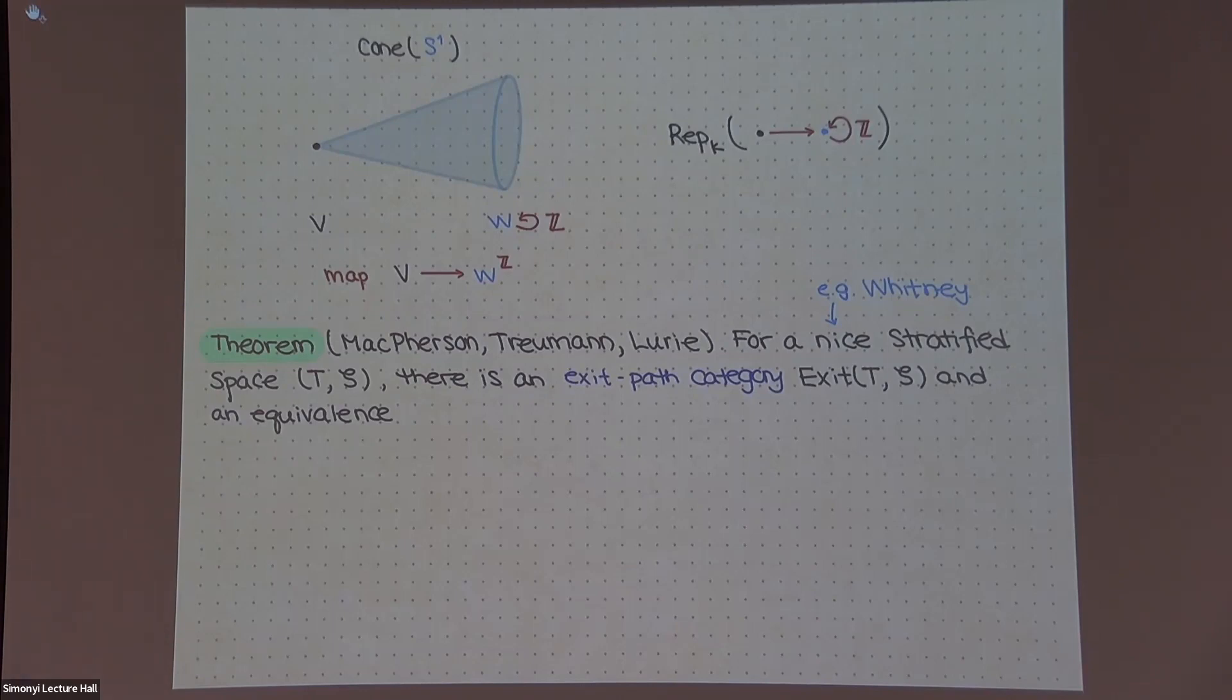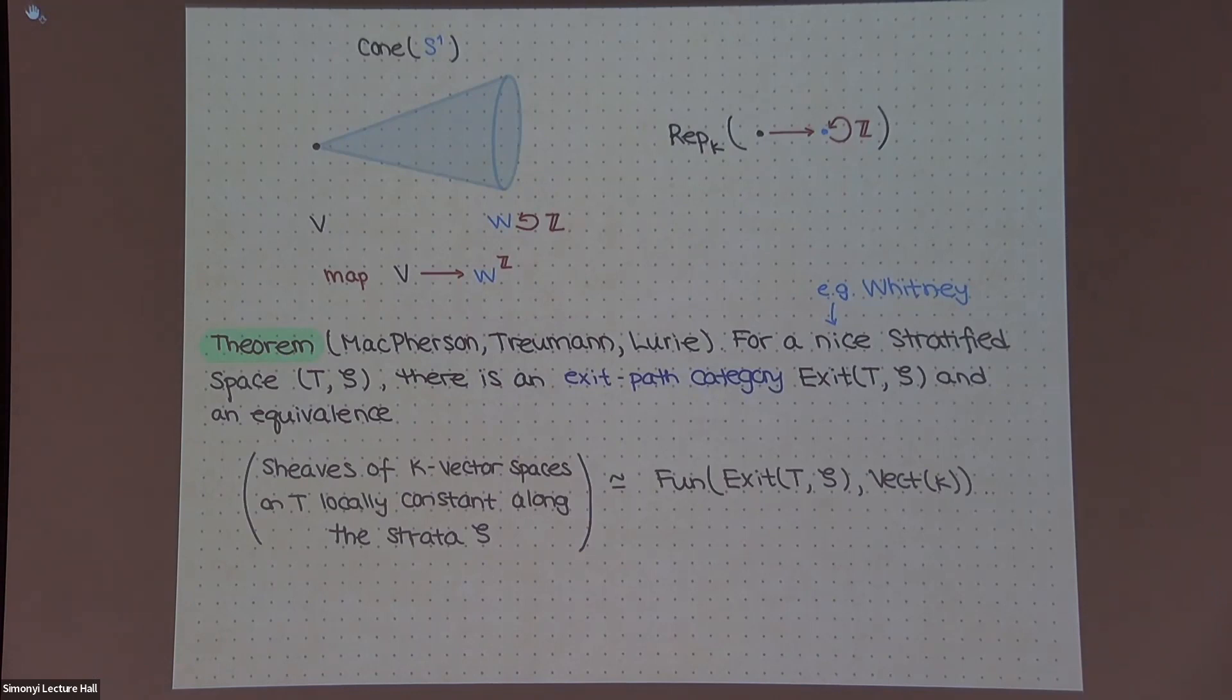So if you have a nice stratified space, so something that's broken up into some nice locally closed subspaces, like if you've heard of a Whitney stratified space, this is an example. There's something called an exit path category that classifies constructible sheaves. And all of these examples above, these were computations of this exit path category. And so yeah, constructible sheaves means sheaves that are locally constant along the stratification.